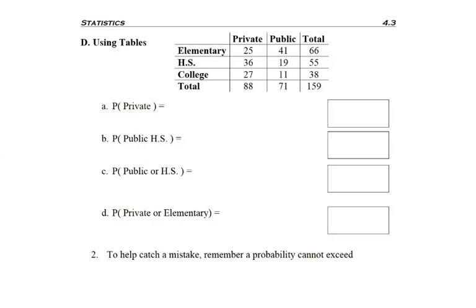Question A asks, what is the probability of randomly picking a student who goes to a private school? Keep in mind, I'm just looking at one attribute. And if you look, here's all the private school students. But instead of having to total up all these categories, hopefully you can see that the totals are provided for me.